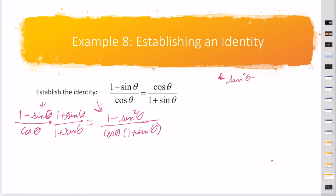Remember, sin² θ plus cos² θ equals 1. If I subtract sin² θ from both sides, I get cos² θ equals 1 minus sin² θ.